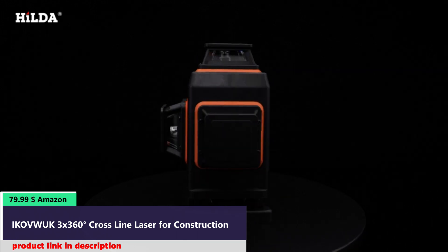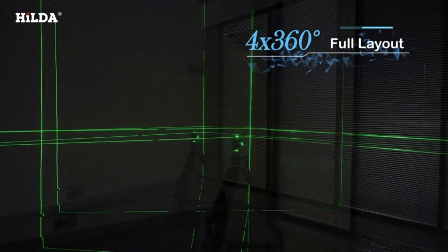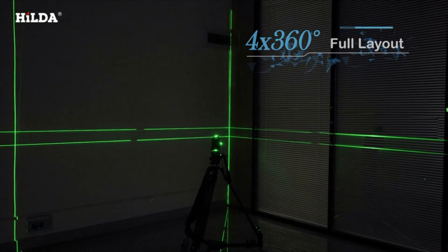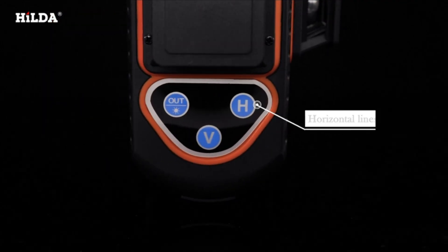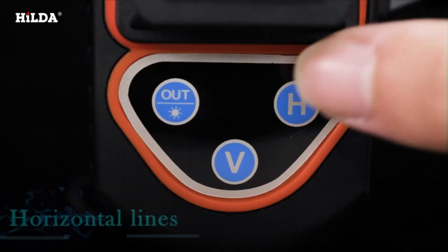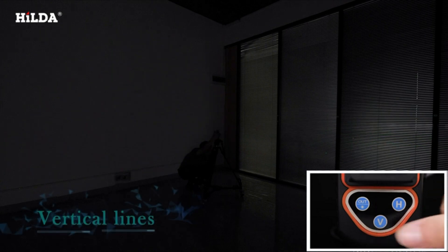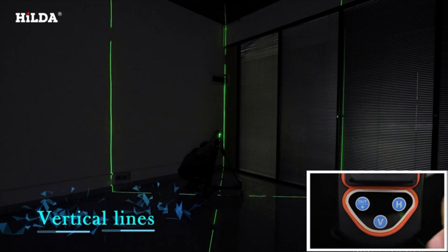4x360 degrees green laser lines and 16 laser lines. HILDA laser level has two horizontal 360 degrees planes, two vertical 360 degrees planes, 16 laser lines which can cover the floor, walls and ceiling all around the room. Horizontal lines and vertical lines cross at 90 degrees angles help you to visualize quickly and finish square layout.